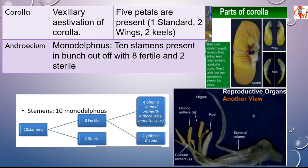In moong bean, urid bean, and soybean, the condition of androecium is 9+1, the diadelphous condition. But in groundnut, all 10 stamens are present together in a bunch, forming a staminal column.